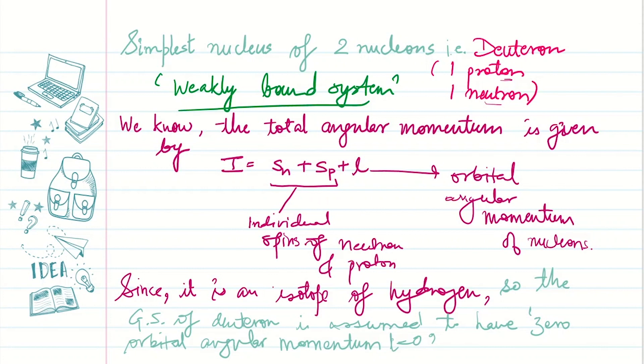Since deuteron is an isotope of hydrogen, the ground state is assumed to have zero orbital angular momentum, that is L equals zero. So the L contribution is zero in the total angular momentum.